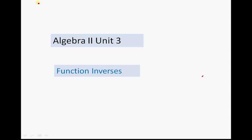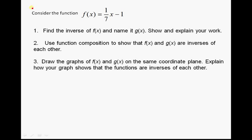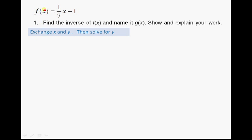This video covers how to work with function inverses. We're going to look at the function f(x) = (1/7)x - 1 and do three things: first, find the inverse of f(x) and name it g(x), showing and explaining the work; second, use function composition to show that f(x) and g(x) are inverses; and third, draw the graphs of f(x) and g(x) on the same coordinate plane and explain how the graph shows the functions are inverses of each other.